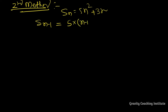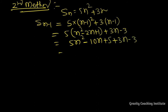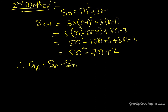Sₙ₋₁ equals 5 into (n minus 1) whole squared plus 3 into (n minus 1), which equals 5 into (n squared minus 2n plus 1) plus 3n minus 3. Expanding: 5n squared minus 10n plus 5 plus 3n minus 3, so Sₙ₋₁ equals 5n squared minus 7n plus 2.